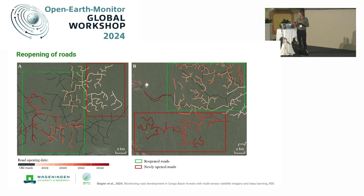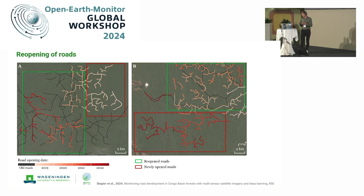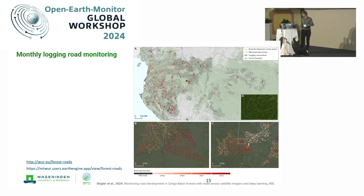We also overlaid the new logging road data with old hand-digitized data to study the amount of reopened roads. That is important because reopening a road has a lower impact on the forest than constructing a new one, and it also helps us to study the time between the initial construction of the road and the reopening. That tells us something about the sustainability of that logging concession, because depending on the location in the tropics, sustainable operations should leave the forest 20 to 30 years before harvesting again.